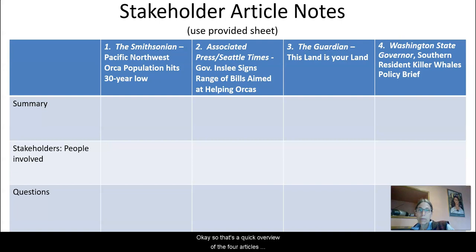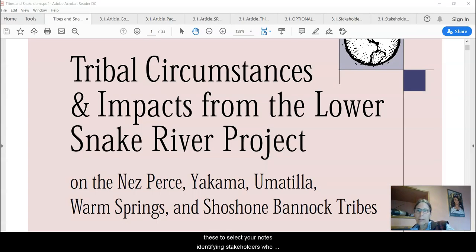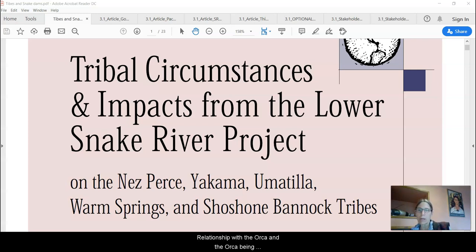That's a quick overview of the four articles available to you. Once again, you have a copy of the stakeholder article note sheet, and it's highly recommended that you use it as you go through these to collect your notes. In terms of identifying stakeholders, I'd like to put in a personal note that I hope you will consider thinking about First Nations people in this area who have a very long relationship with the orca and the orca being dependent on salmon.